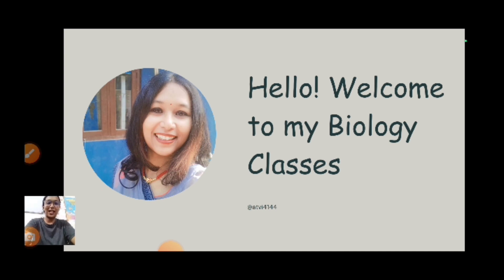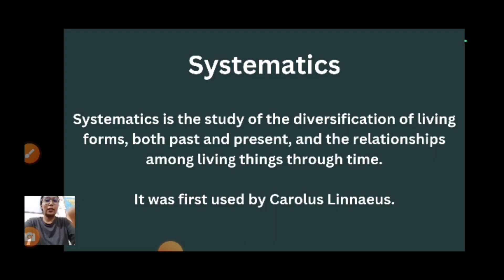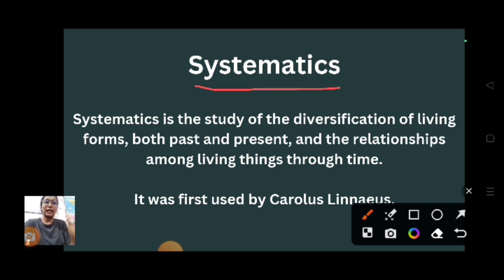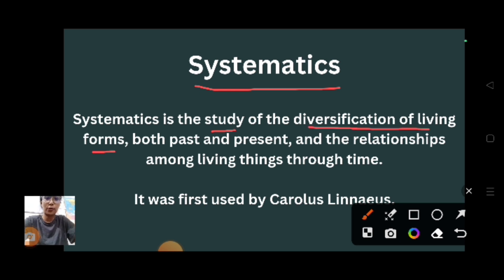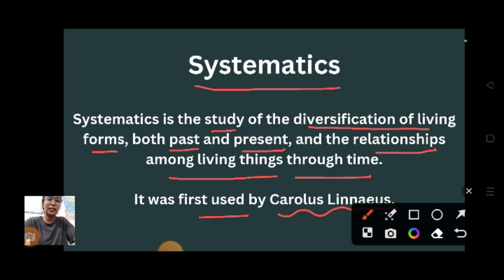Hello everyone, welcome to my biology class. This will be the last part of Chapter 1, Class 11 - The Living World. Let's start with the topic called systematics. It is the study of the diversification of organisms which were there in the past and which are there in the present, and their interrelationship. The term was first used by Carolus Linnaeus, who was known as the father of taxonomy.